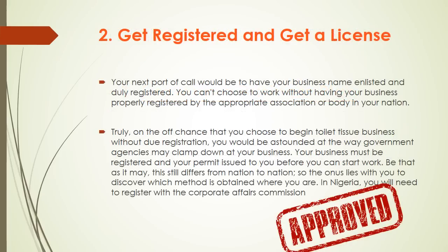Step two: get registered and get a license. Your next step will be to have your business name enlisted and duly registered with the Corporate Affairs Commission. You can't choose to work without having your business properly registered by the appropriate body in your nation. If you choose to begin a toilet tissue business without due registration, you would be astounded at how government agencies may clamp down on your new business. Your business must be registered and your permit issued before you can start work. Registration requirements differ from country to country, so the onus lies within you to discover which method applies where you are.